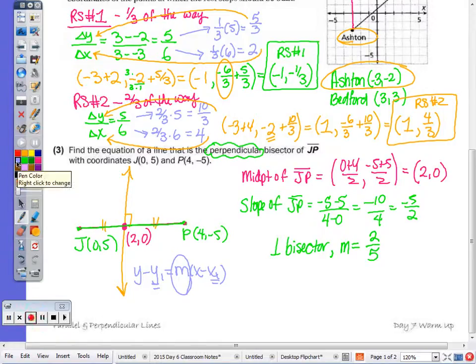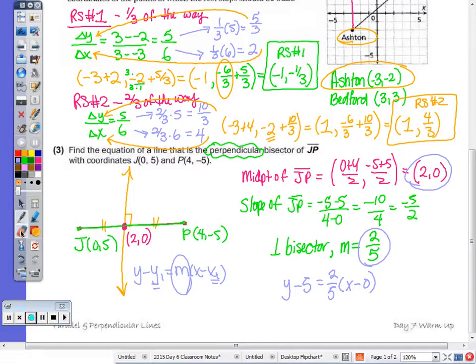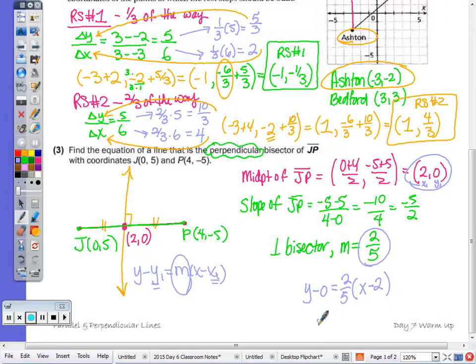Now substituting in this equation, using this point and this slope. So I'm going to have y minus 0 equals m times x minus x1, which is 2. y minus 0 is y, so distributing, we get 2 fifths x minus 4 fifths.